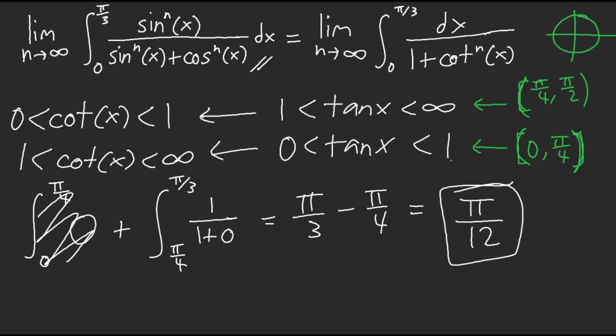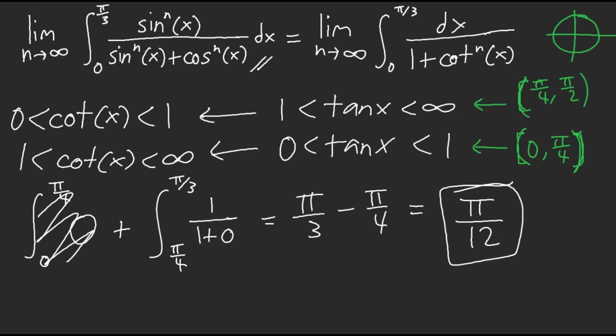Notice that I still follow the process of x to the power of n. In this case, we have a function to the power of n — in this example, cotangent. Sometimes we need to find the interval to determine where we have to split the domain. If you need to, you can change it to tangent x if you're more comfortable with that.